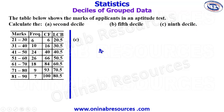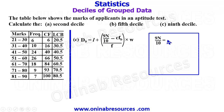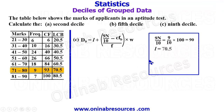For part c, we calculate the ninth decile. The formula uses 9n/10. We calculate 9/10 × 100 = 90. Checking the cumulative frequencies — 84 and 93 — the value 90 falls within the class with cumulative frequency 93. The lower class boundary L of the ninth decile class is 70.5, and the cumulative frequency before it CFb is 84.